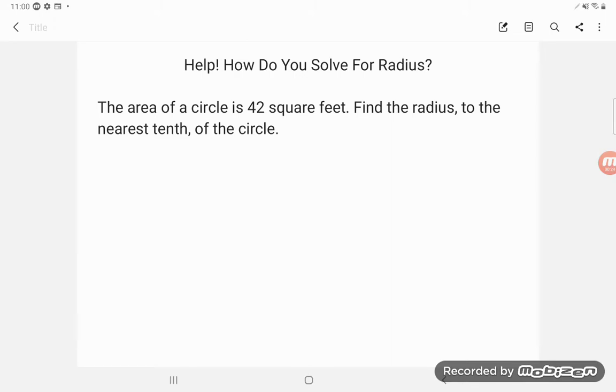It says the area of a circle is 42 square feet. Find the radius to the nearest tenth of a circle. Well, no wonder PJ was confused.